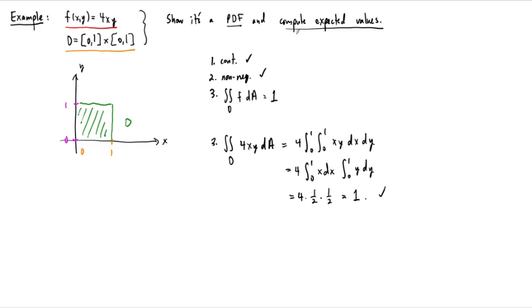The second part of the example is to compute the expected value of this probability density function. Because of all the symmetry here, the x and y can be replaced, nothing changes. Even the intervals, if you swap x and y, the domain remains the same. So the expected value in the x and y directions are going to be the same. We can just compute this once. If you don't agree with this or don't see this right away, you can compute both of them and show that they're the same.